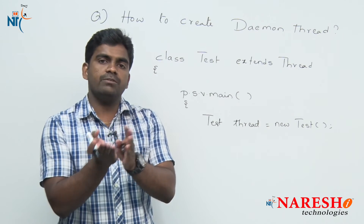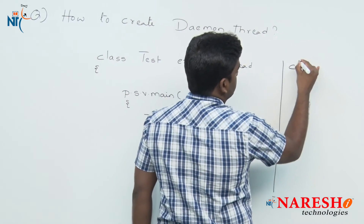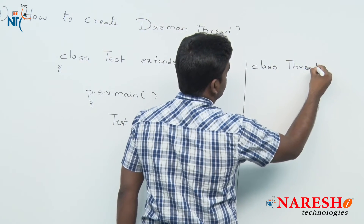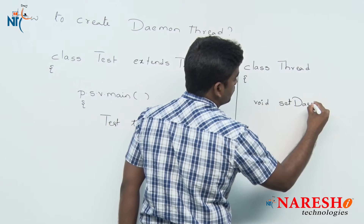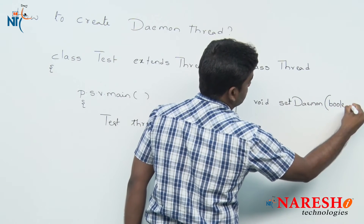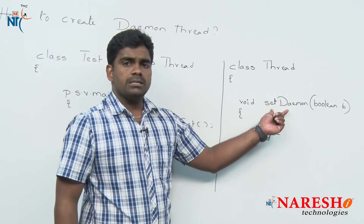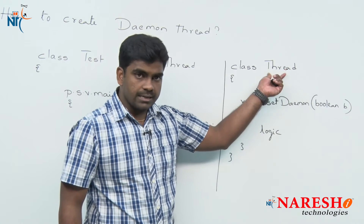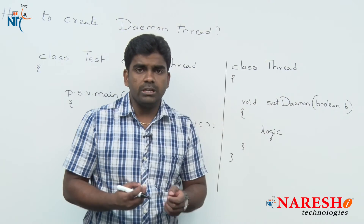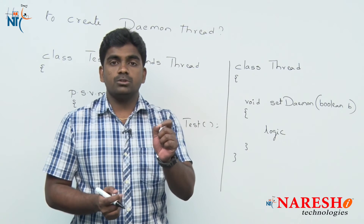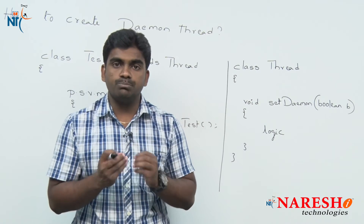So how can we convert this non-daemon behavior to daemon behavior? In the Thread class, there is a method called setDaemon(). It is a non-static method that takes a Boolean as an argument. If you pass true, we are converting non-daemon behavior to daemon behavior. If you pass false, it remains non-daemon, and by default it is non-daemon.